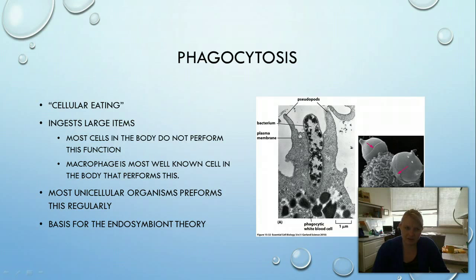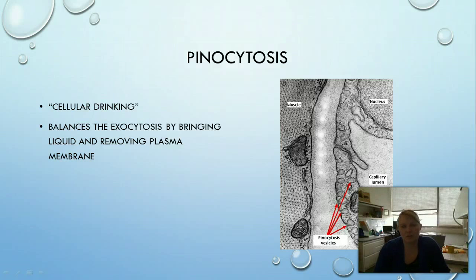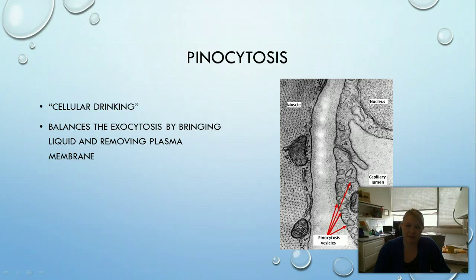Phagocytosis is the basis for the endosymbiont theory — we believe the mitochondria and chloroplast were brought into cells and began functioning within them instead of being broken down. Videos on phagocytosis are available on Blackboard and are worth watching. The next type is pinocytosis — cellular drinking. All the transport in and out of the cell creates a balance issue with plasma membrane and cytosol, so pinocytosis forms small vesicles that bring in small amounts of fluid and remove extra plasma membrane, maintaining that balance and bringing in small molecules.